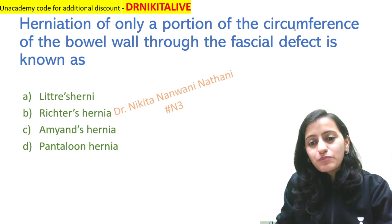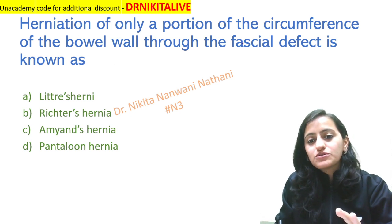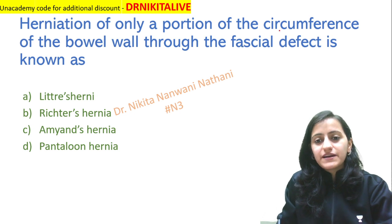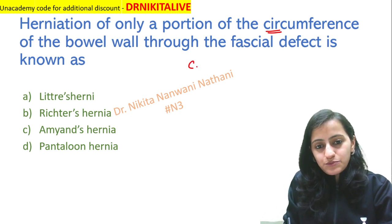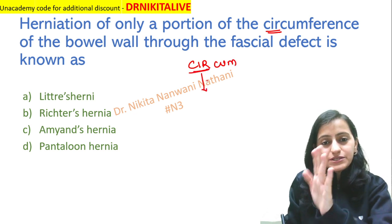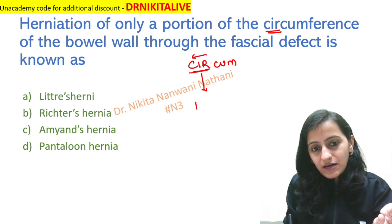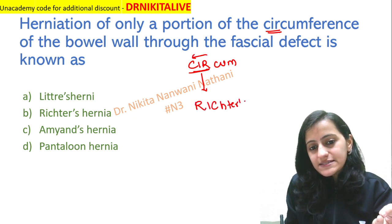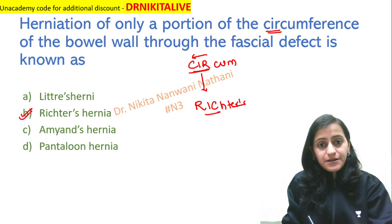Herniation of only a portion of the circumference of the bowel wall through the fascial defect — the trick to remember this is: take the word 'circumference,' take C-I-R, reverse it, and it becomes R-I-C. So that is Richter's hernia.